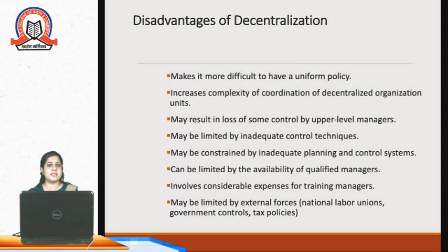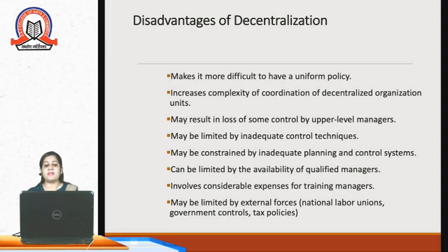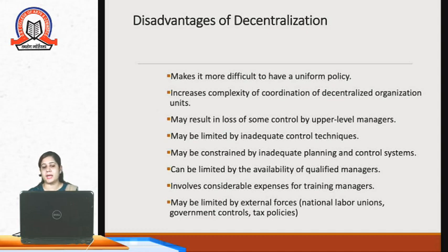Disadvantages of decentralization: It is very difficult to have one uniform policy and there will be a lot of complexity in decision making activities and coordination. There will also be inadequate planning and control systems, considerable expenses due to the training required, and limitations from external forces such as national labor unions, government controls, and tax policies.